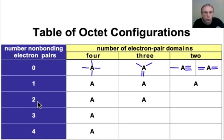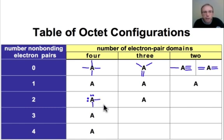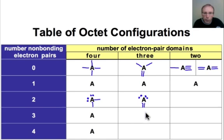I'll skip the second row for you to complete on your own. The third row involves 2 non-bonding pairs of electrons. If we have 4 electron pair domains, 2 of them must be non-bonding pairs of electrons. We still have 2 more electron pair domains, so to get to an octet we add 2 single bonds. With 3 electron pair domains, 2 of which must be lone pairs, the way we get to an octet is to add a double bond domain.